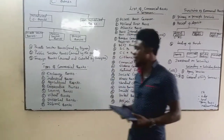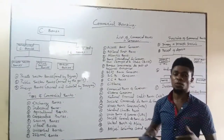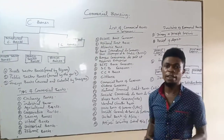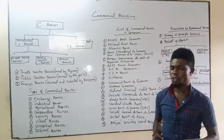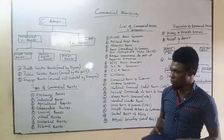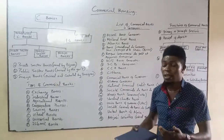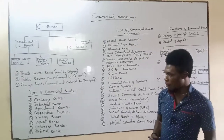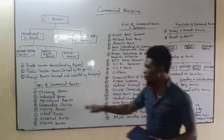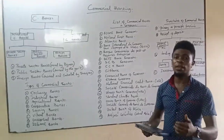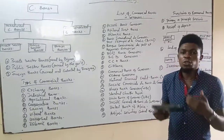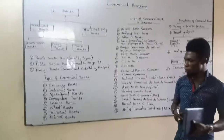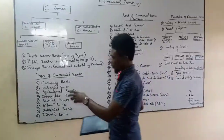We also have industrial banks. These are banks that encourage heavy industries by giving long-term loans to these industries to carry out their production or to facilitate their production process. These are banks that grant heavy loans to industries that need those loans. We also have agricultural banks — banks established to encourage the agricultural sector by giving loans to help boost agriculture and those involved in farming.